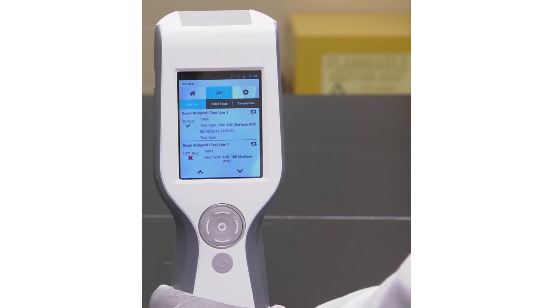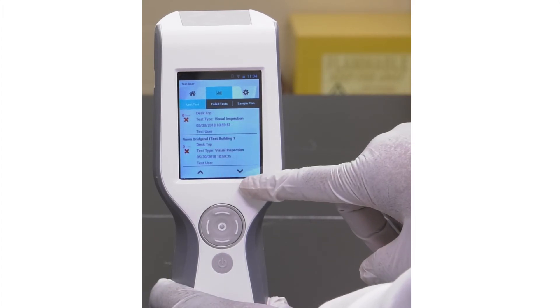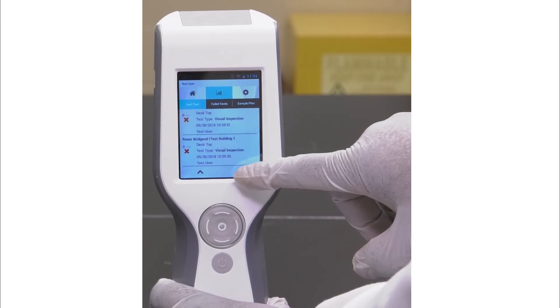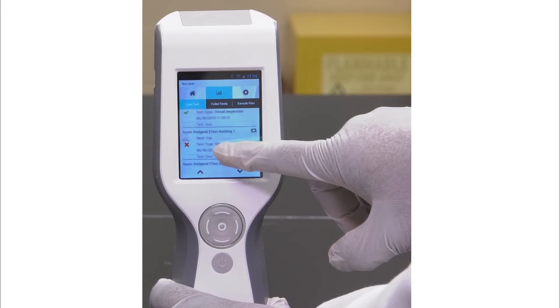To display results with a failed test status, tap failed tests. To display the most recent results, tap last test. To display results for the selected sample plan, tap sample plan. To display additional test results, tap the scroll down or scroll up arrows, or simply swipe up or down on the touch screen.